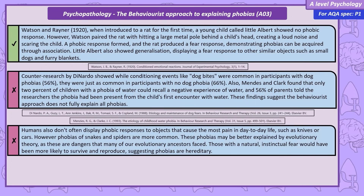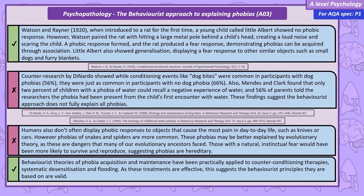Humans also don't commonly display phobic responses to objects that cause the most pain in day-to-day life. For example, many people accidentally cut themselves with a knife when cooking, yet phobias of knives are quite rare. Whereas very few people are bitten by a snake or spider, but phobias of snakes and spiders are common. An evolutionary explanation might be more valid for fears of drowning, heights, snakes, and spiders — dangers our evolutionary ancestors faced — suggesting that a natural instinctual fear would have aided survival and reproduction, meaning phobias may be hereditary. One positive evaluation is that behaviourist theories have been used to develop effective counter-conditioning therapies such as flooding and systematic desensitisation, which suggests the underlying theories are valid explanations for phobia development and maintenance.